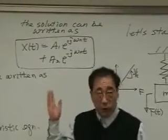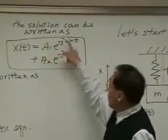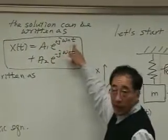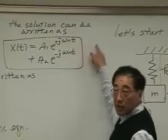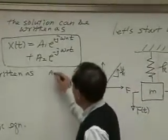So if you look at the solution, and this one has A1 cosine omega m t plus j sine omega m t, right? So A1.